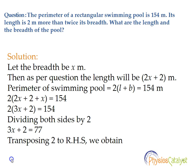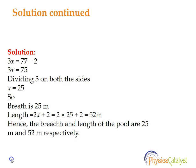Simplifying, we get 2(3x + 2) = 154. Dividing both sides by 2, we get 3x + 2 = 77. Now transposing 2 to the right-hand side, we get 3x = 77 - 2, so 3x = 75.